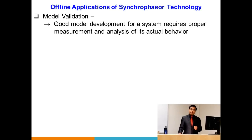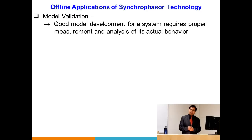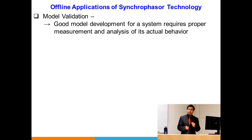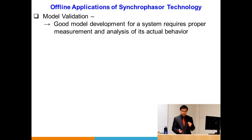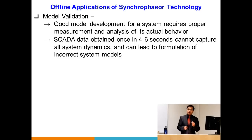For a good model, we need a lot of accurate measurements. We need to see how the component or system behaves when certain inputs are given. It is extremely important to get measurements that capture the dynamics of the behaviour of the particular system for which we need to build the model. If scalar data is coming only once every 4 to 6 seconds it cannot capture the dynamics of the system, and our model may not truly reflect the reality of that system or component.